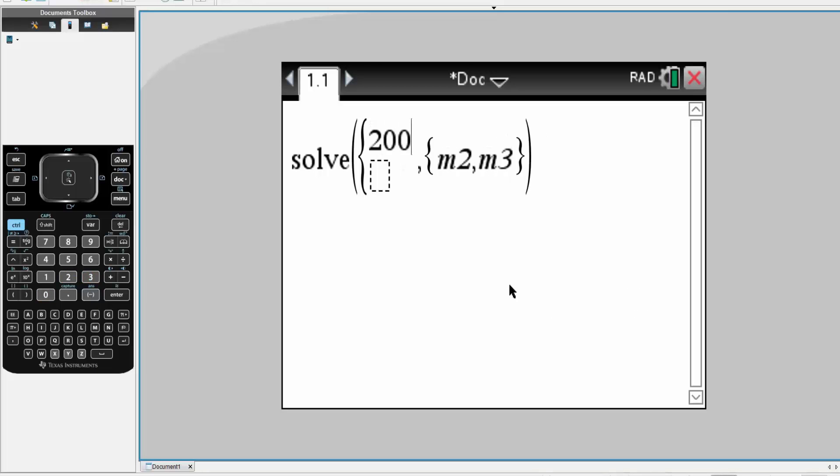We will write what we had. So, we had 200 times 0.3 is equal to M2 times 0.9 plus M3 times 0.2.